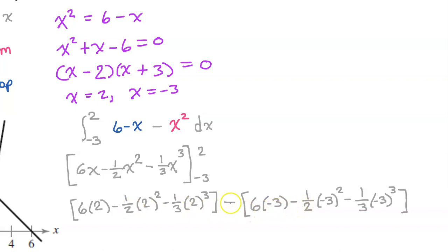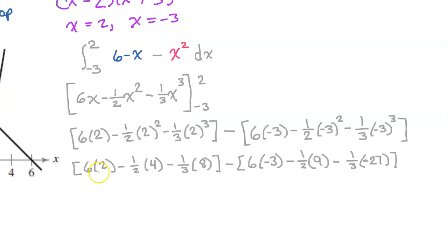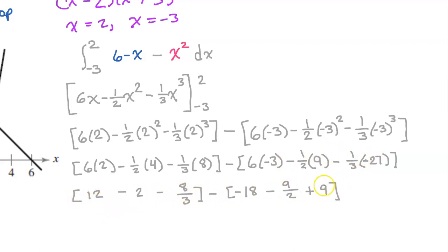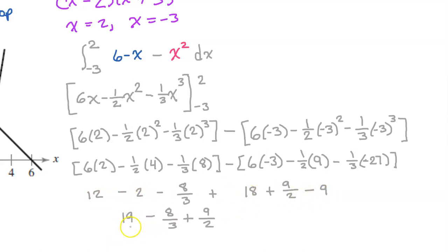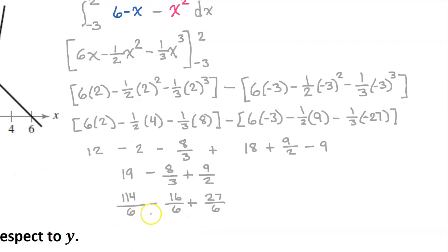However, if this was a multiple choice question, the answer wouldn't be written like that, so let's simplify. Applying all exponents, then the multiplication, then distributing the negative sign on the right-hand side: 12 minus 2 plus 18 minus 9 is 19. Writing everything with a common denominator, the final answer is 125 over 6.